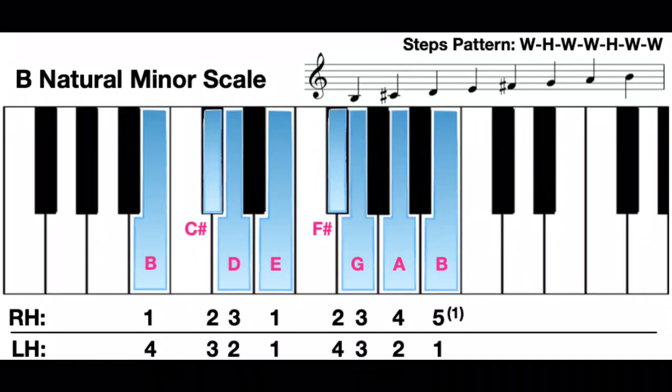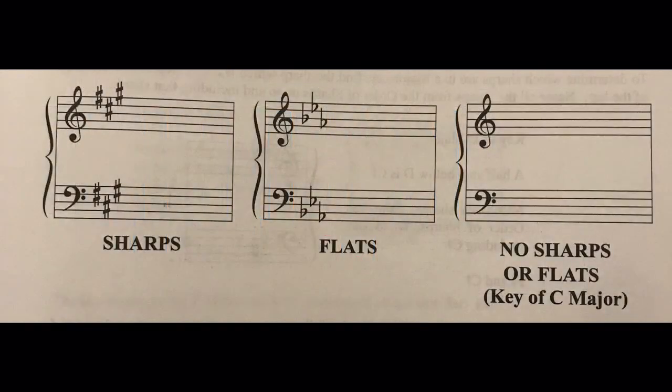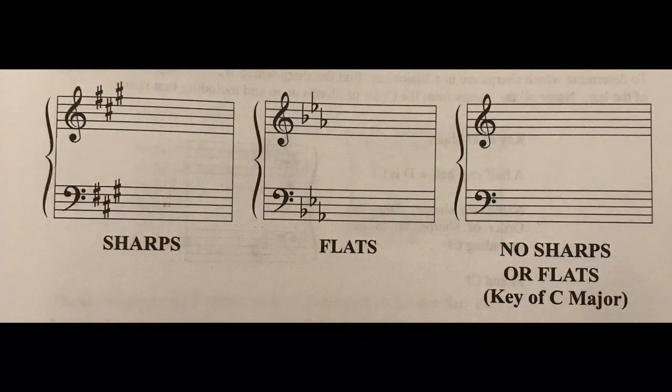Today I'm going to introduce the major and minor scales and their key signatures in piano. The major key signatures are divided into sharps, flats, and no flats or sharps. That's the C major.